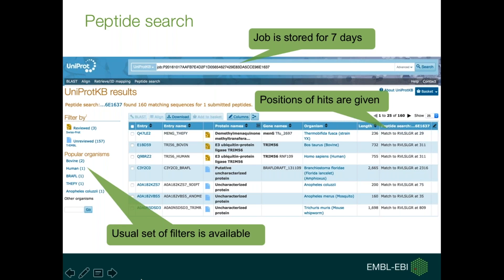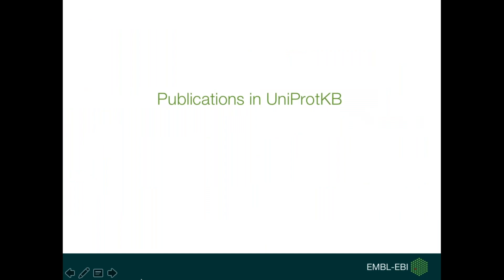Once a search is run, you're presented with the usual tabular view of results, as is common to all searches run on UniProt.org. All searches are provided with a unique job identifier, which allows you to retrieve and come back to those results up to seven days later. The positions of the hits onto each sequence are provided, and the usual set of filters available for all UniProt searches is available here as well. Data can also be downloaded and customized before download, so that you can tailor the data you actually need for your further research.